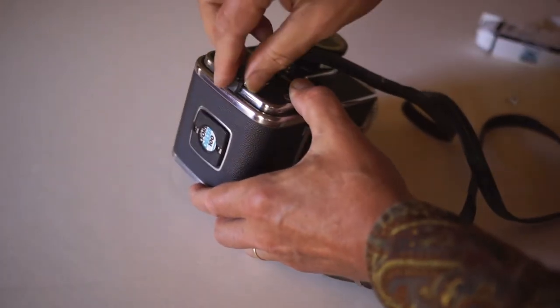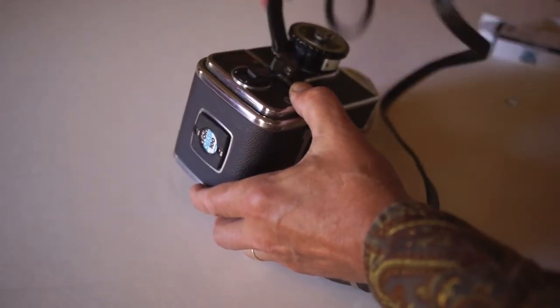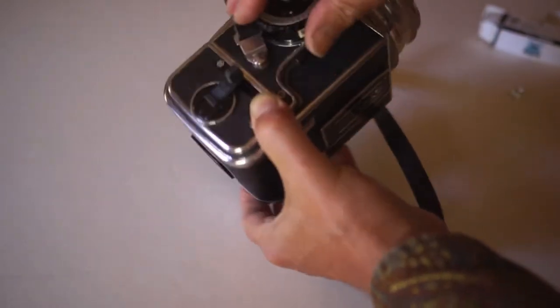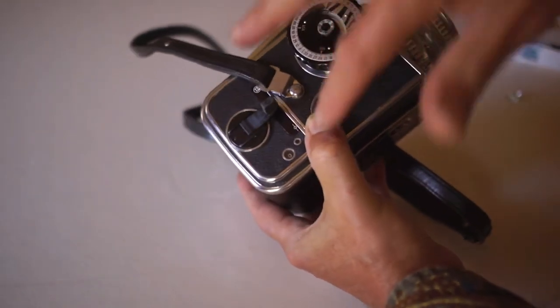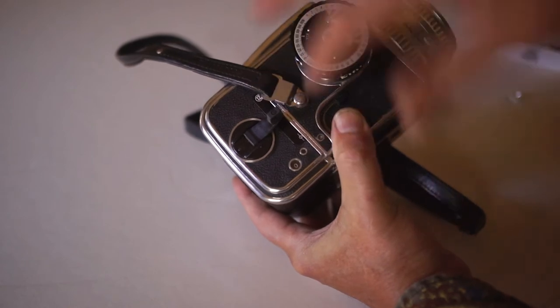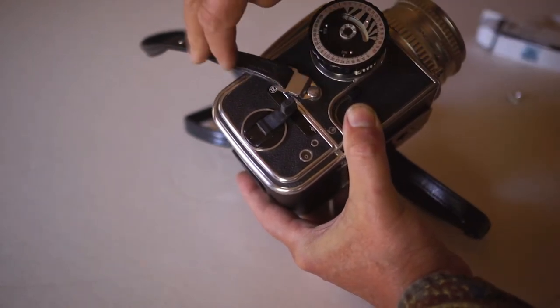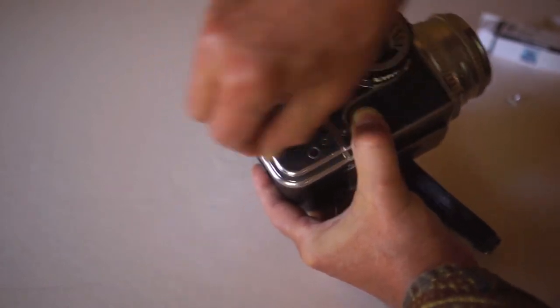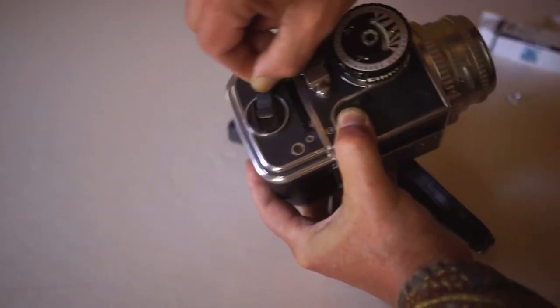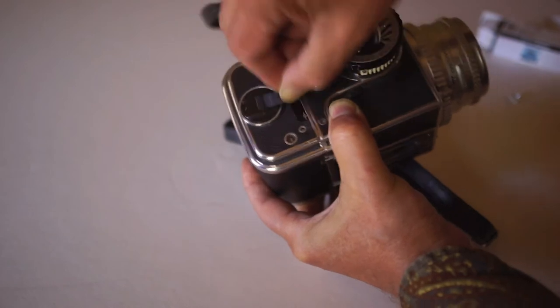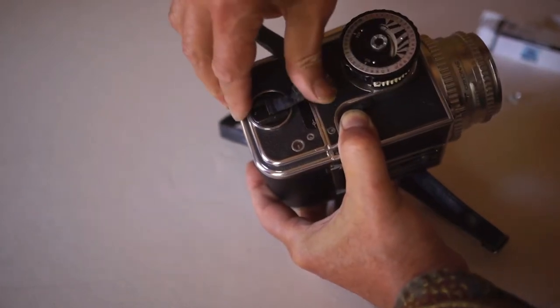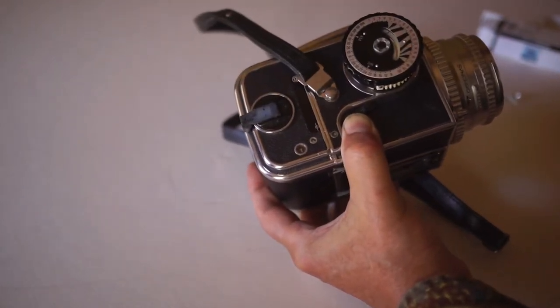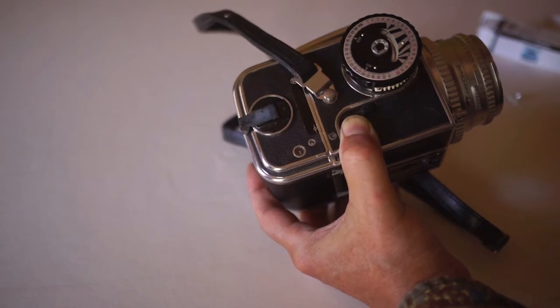Next, we'll be turning this crank on the side and advancing it until it stops, and then we'll see the number one show up on the film counter here. We just turn this several turns. There's our number one and it stops. Now, we put this crank away until we've shot our twelve exposures.